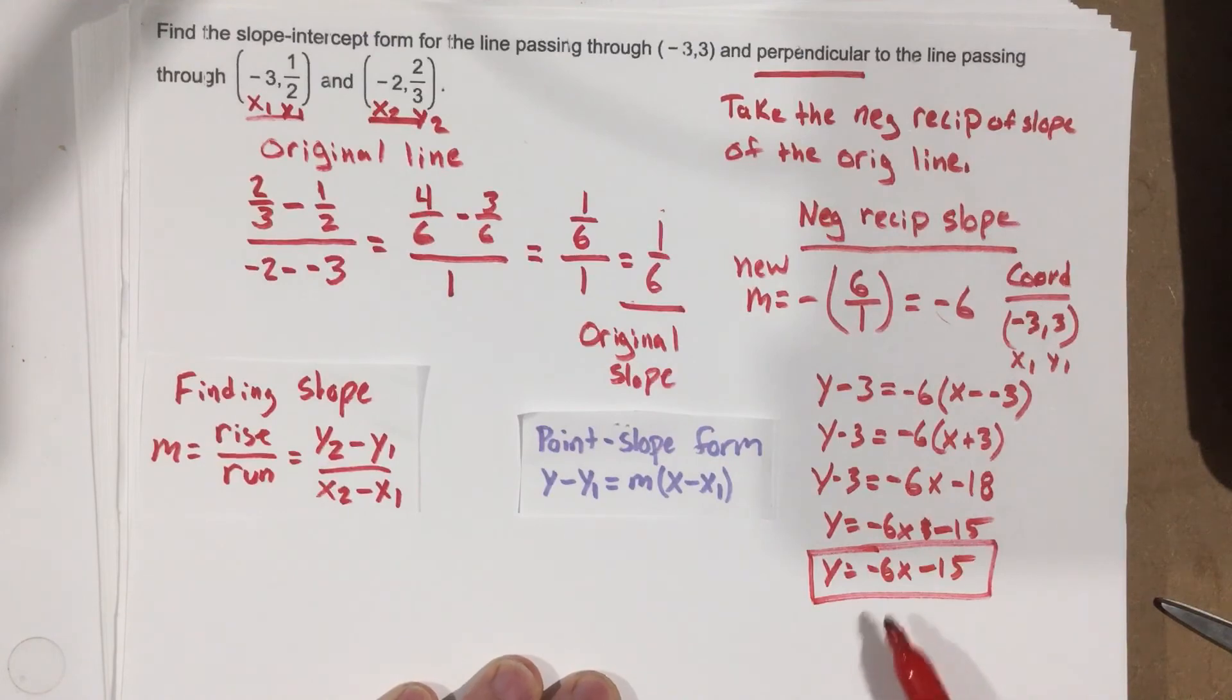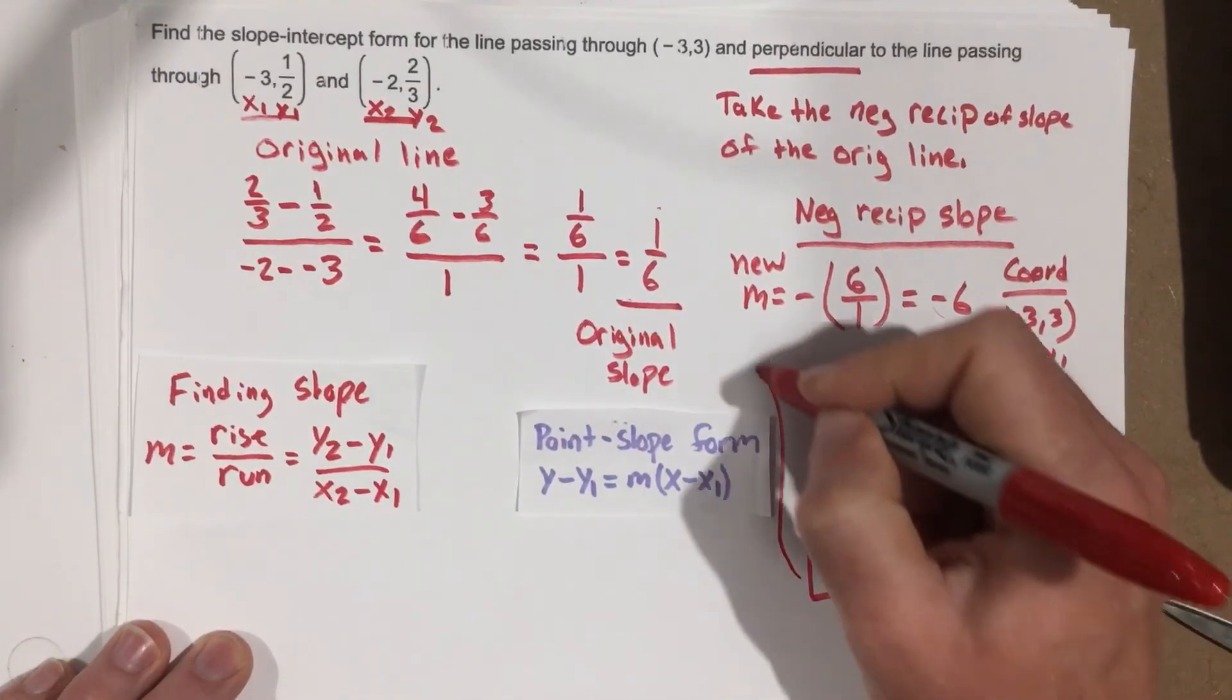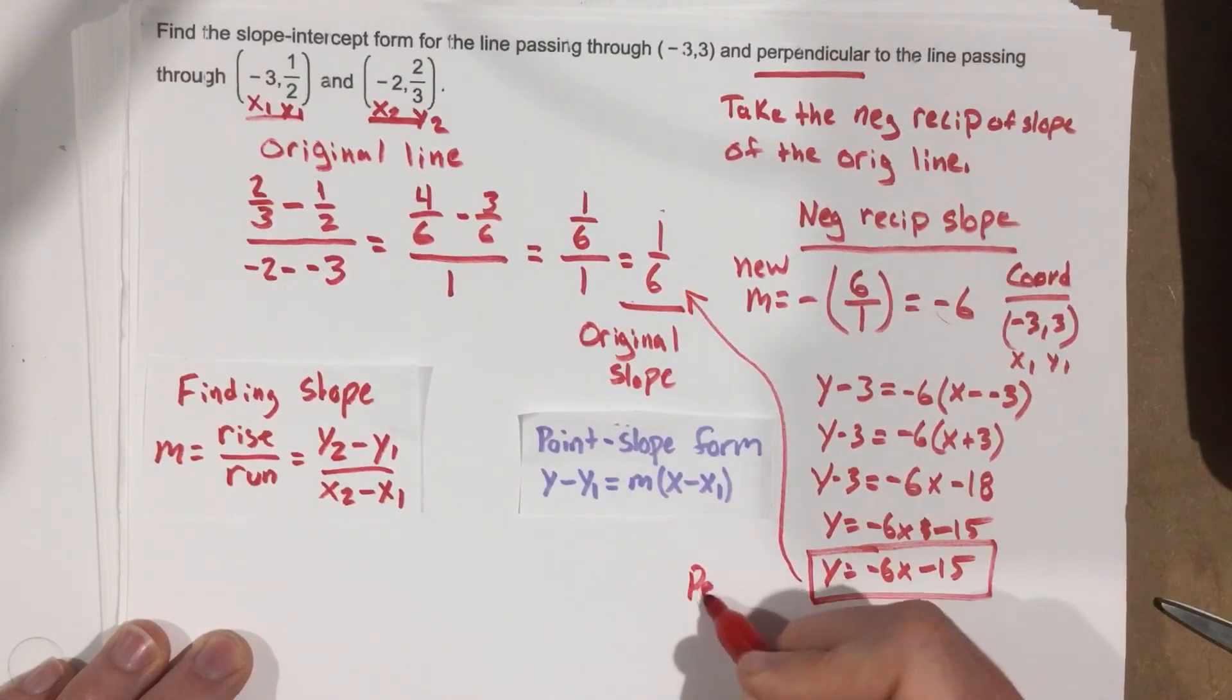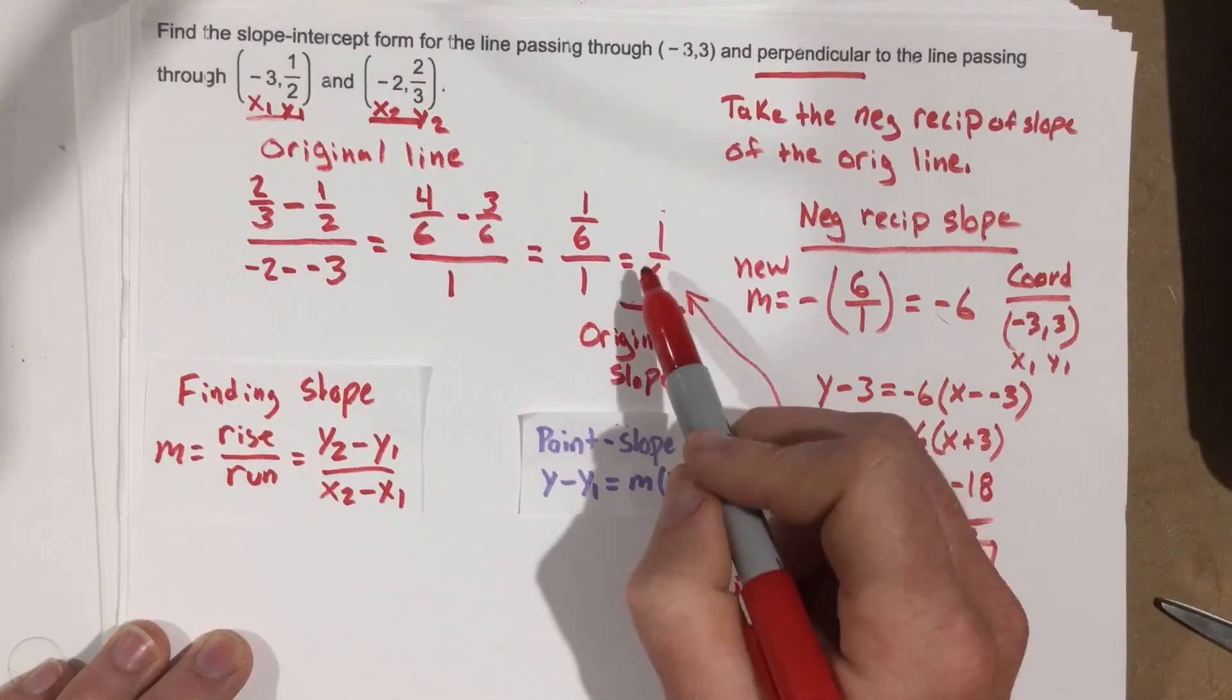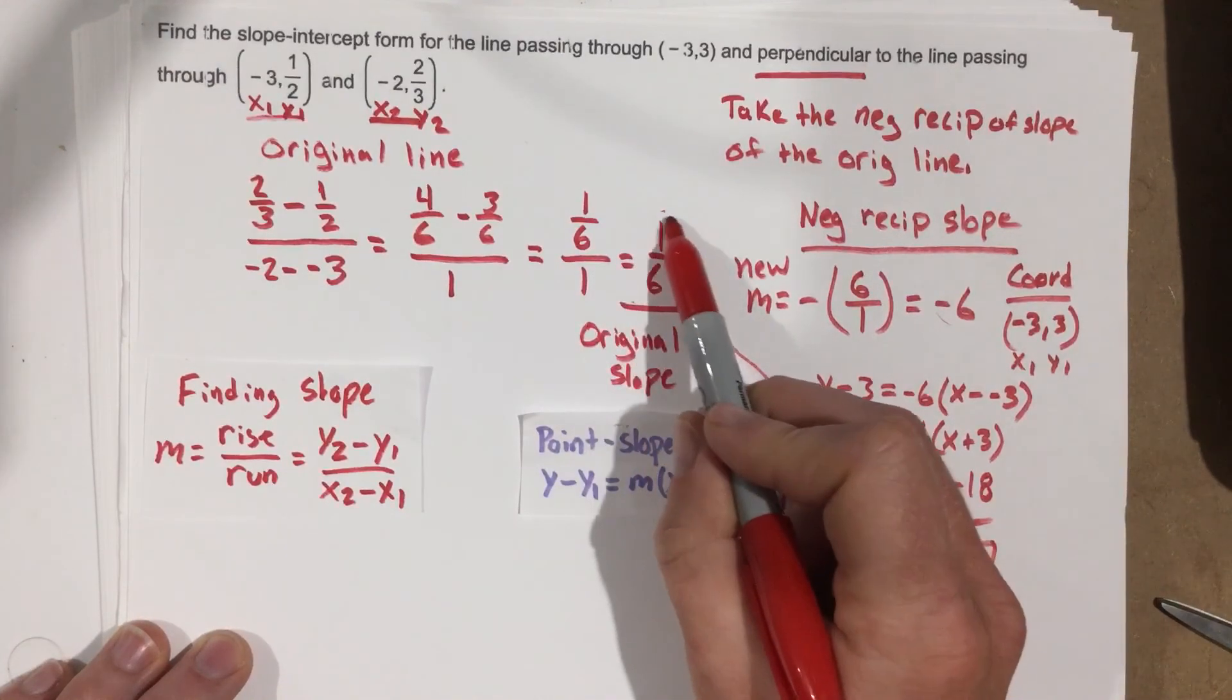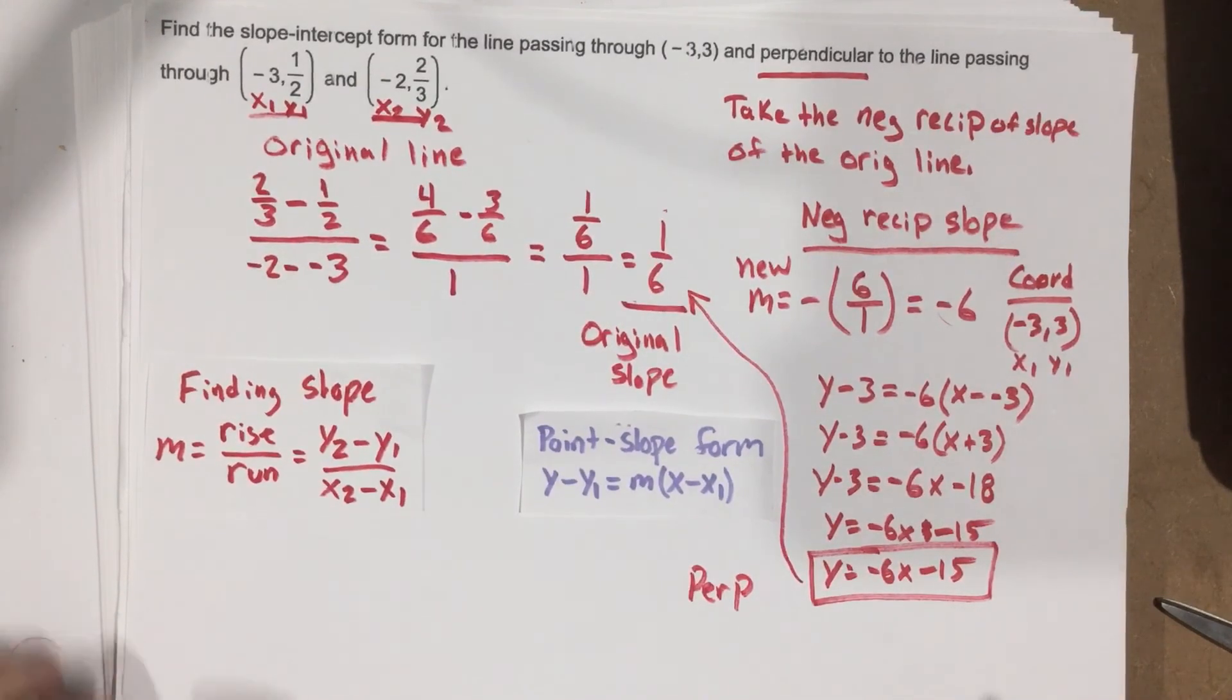So this is the perpendicular line. So perpendicular line to that line. Although I didn't write a line here, this is the slope for that line, which is the only thing that we really needed to find the perpendicular line.